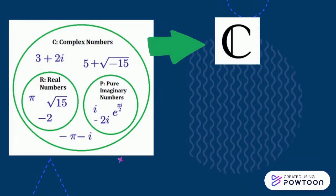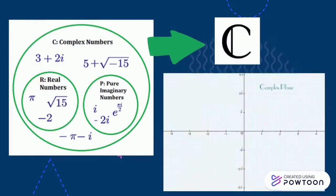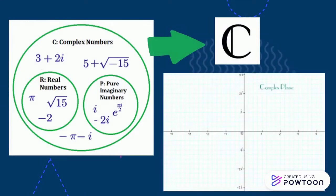It is visualized as the usual Euclidean plane following simple identification. The complex number z equals x plus i y is an element of C that is identified with the point (x, y), which is an element of R squared.